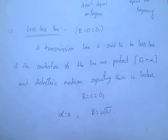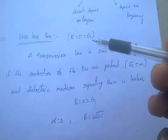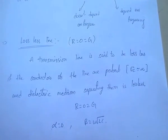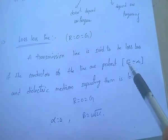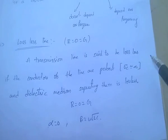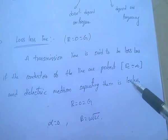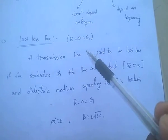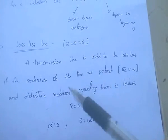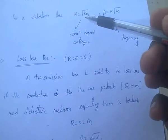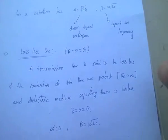For a lossless line, R equals 0 and G equals 0. A transmission line is said to be lossless if the conductors are perfect — that means sigma is infinity — and the dielectric medium separating them is lossless. For this lossless condition, alpha equals 0, and beta equals omega into root LC.